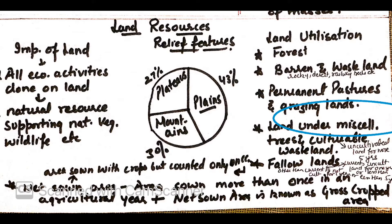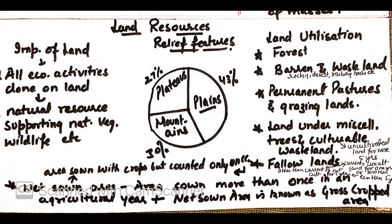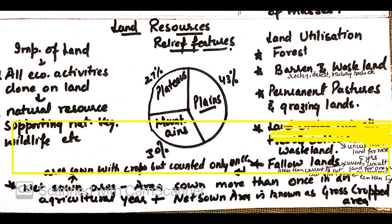Next is fallow lands. This is divided into two parts: current fallow land, which is uncultivated land for 1 or less than 1 year, and other than current fallow land, which is not used for cultivation for 1 year or less than 5 years. Coming up to the net sown area — area sown with crops but counted only once. Next is gross cropped area, which includes area sown more than once in an agricultural year, plus net sown area.